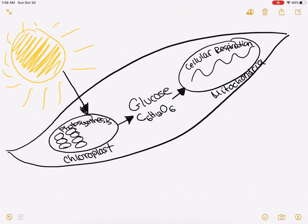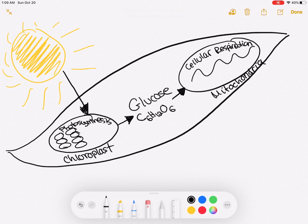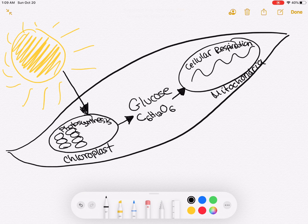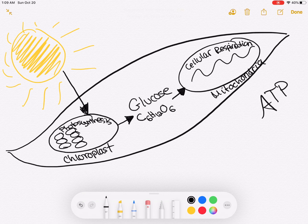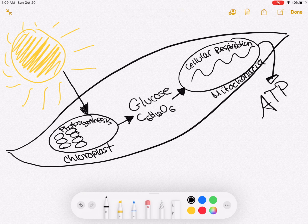So glucose is going into the mitochondria. The next thing I'm told to do is to draw ATP outside of the leaf and then to draw an arrow from the mitochondria to ATP.